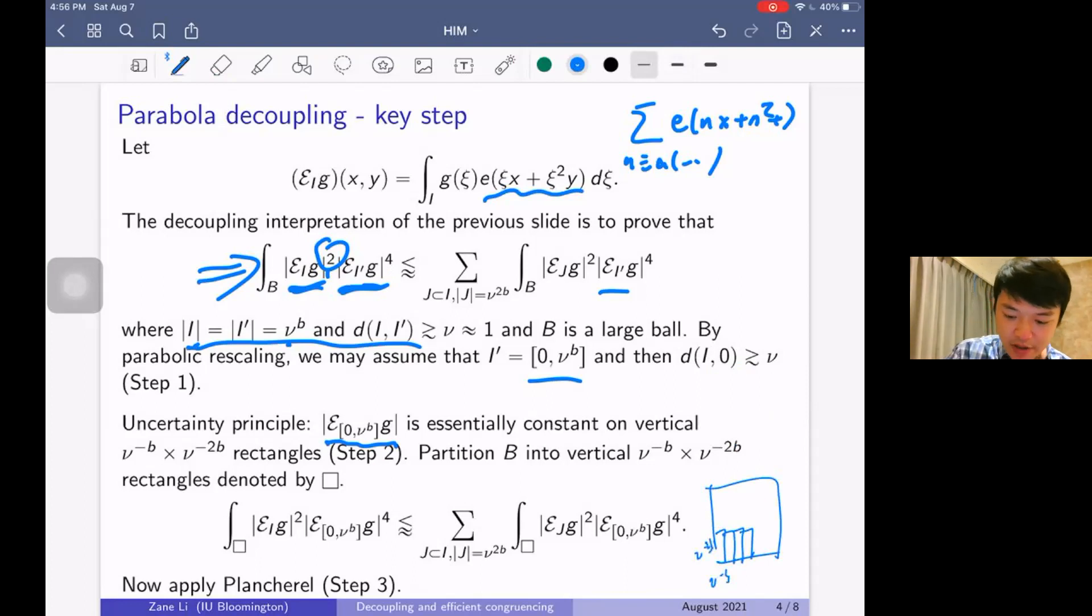We partition our big ball B into rectangles all of size ν^{-b} by ν^{-2b}, and it suffices to prove this estimate over each such rectangle. But now this expression is constant on these boxes, so we can cross them out because the same constant appears on both sides. This is like how in the efficient congruencing side, the x_2, x_3, x_5, x_6 variables are zero mod p^{2b}; the scale p^{2b} doesn't see them, so we can just delete them. And what was the last step? The last step was to find square root cancellation among the two variables right here, and this is a two, so we just use Plancherel, and then we're done.